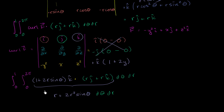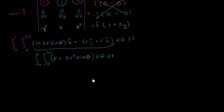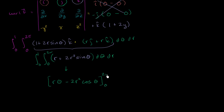Theta goes from 0 to 2π and r goes from 0 to 1. This is now just a straightforward double integral. We first take the antiderivative with respect to theta. The antiderivative of r with respect to theta is just r theta — you can view r as a constant. The antiderivative of 2r squared sine theta is negative 2r squared cosine theta. We evaluate this from 0 to 2π.